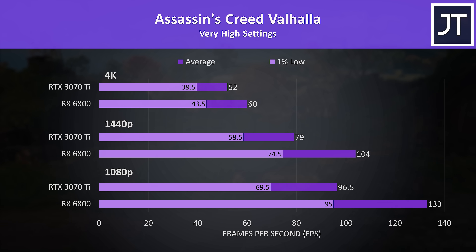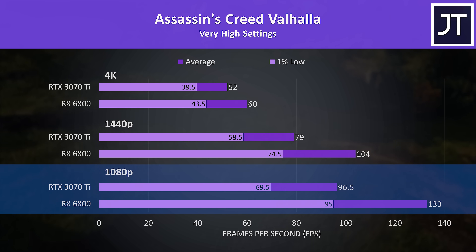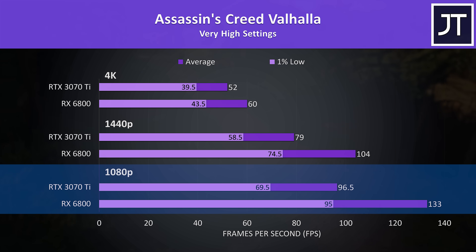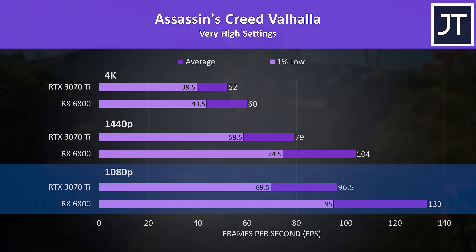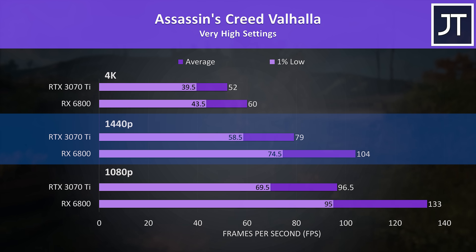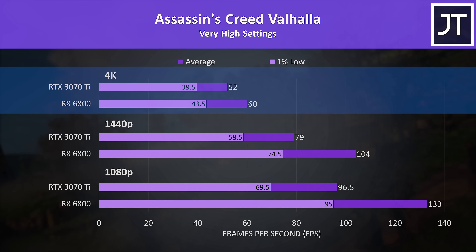Assassin's Creed Valhalla was tested with the game's benchmark, and this game heavily favors Radeon graphics. The 6800 was reaching 38% higher average FPS compared to the 3070 Ti at 1080p, 32% higher at 1440p, then 15% higher at 4K and right on 60 FPS.